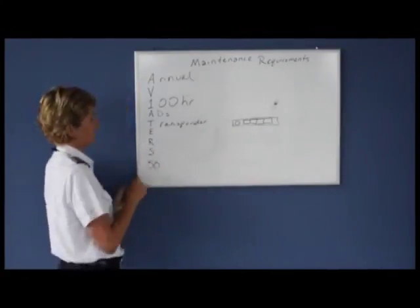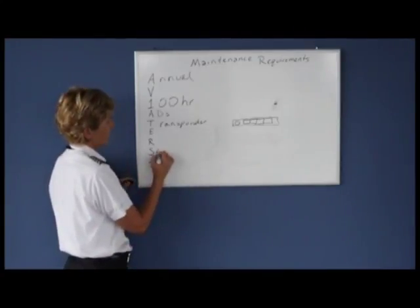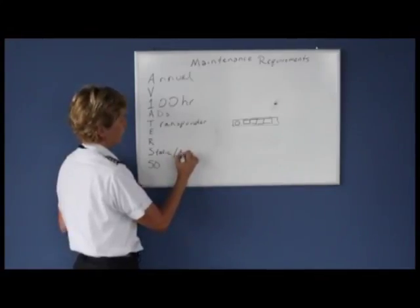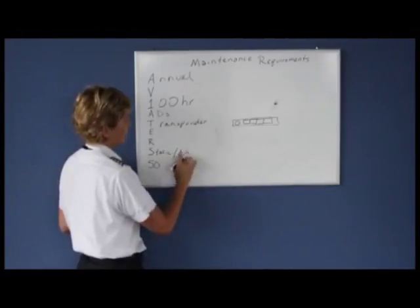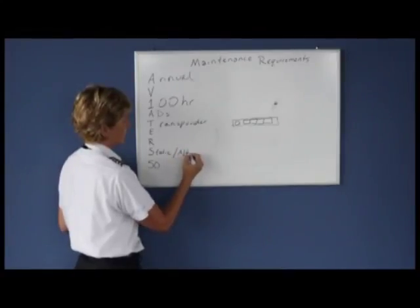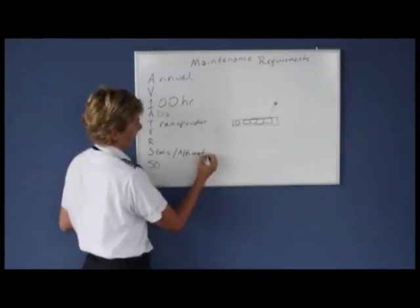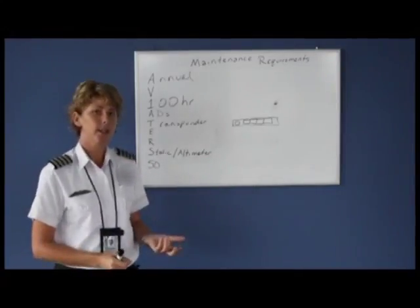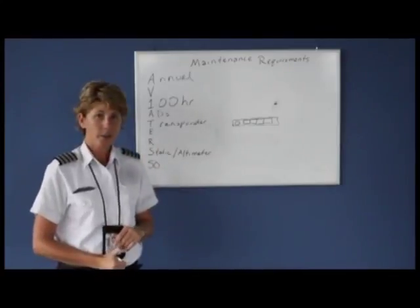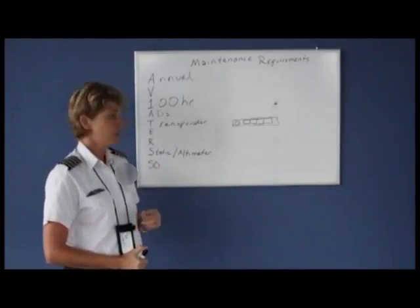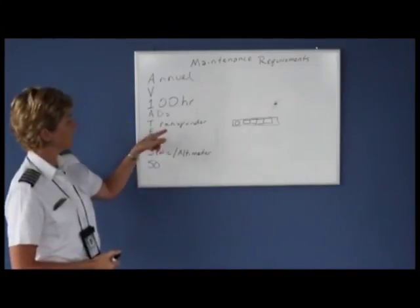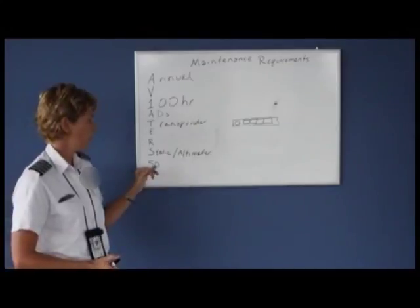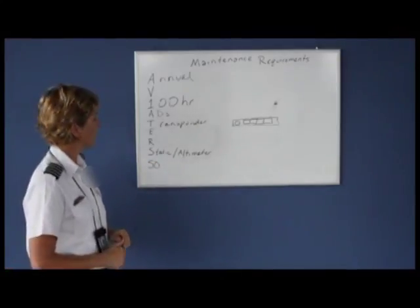The S in our memory aid stands for static source and altimeter. The static and altimeter also have to be inspected by the avionics technician. There aren't a lot of them around, so it's a good thing you only have to go find one every 24 calendar months. The avionics technician will inspect both the transponder and the pitot-static system and altimeter every 24 calendar months.